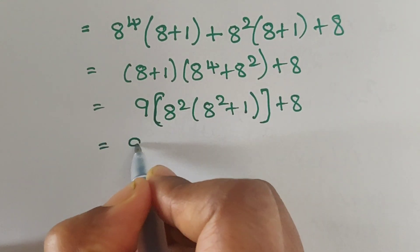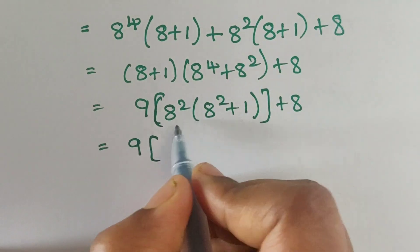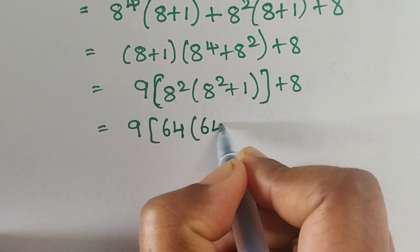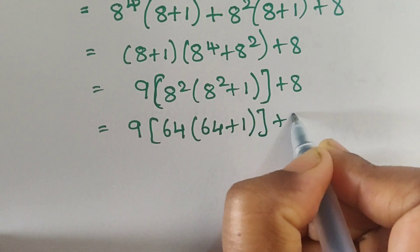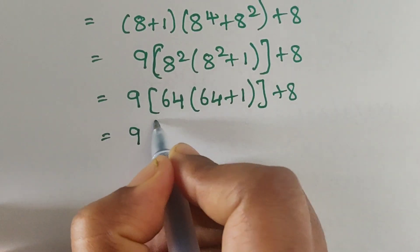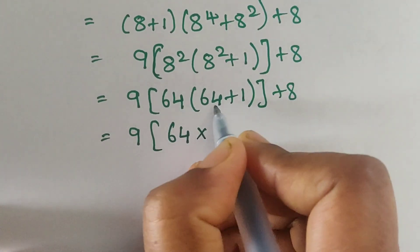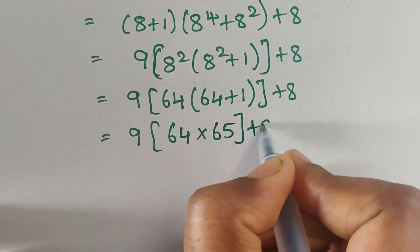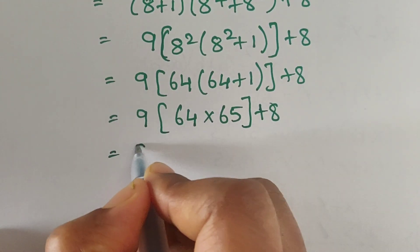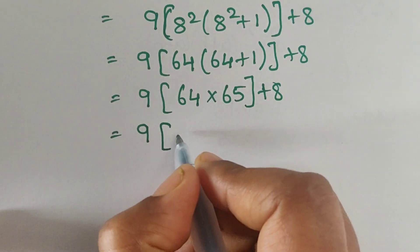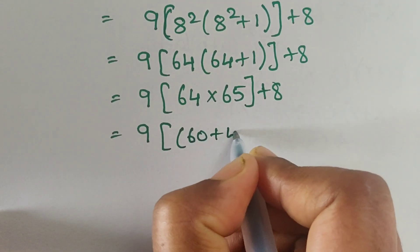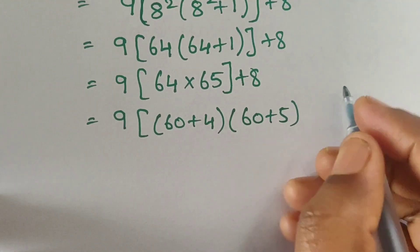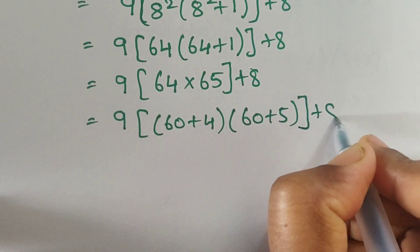So now we have 9 times. 8 squared equals 64. So we get 9 times 64 times (64 plus 1), close bracket, plus 8. Now 64 plus 1 equals 65. We can write 64 as 60 plus 4 and 65 as 60 plus 5.